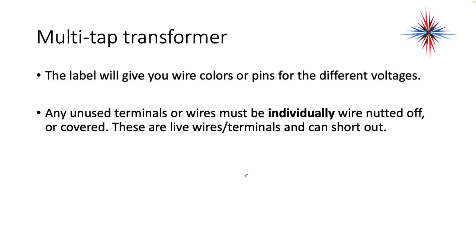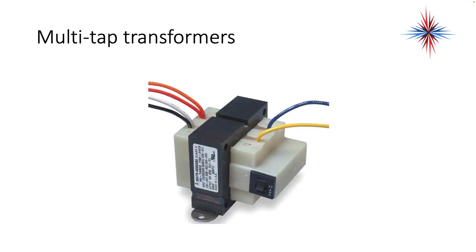The label will give you the wire colors and pins for the different voltages. Any unused terminals or wires must be individually wire nutted off or covered — these are live wires and terminals and they can short out. Don't put the additional wires under the same wire nut; they have to be individually wire nutted off or you're going to short the transformer. If you're just using this for 120 volts, you're going to use the black and white and cap off the two additional wires. My blue and yellow are my low-voltage side — you're going to be using those.